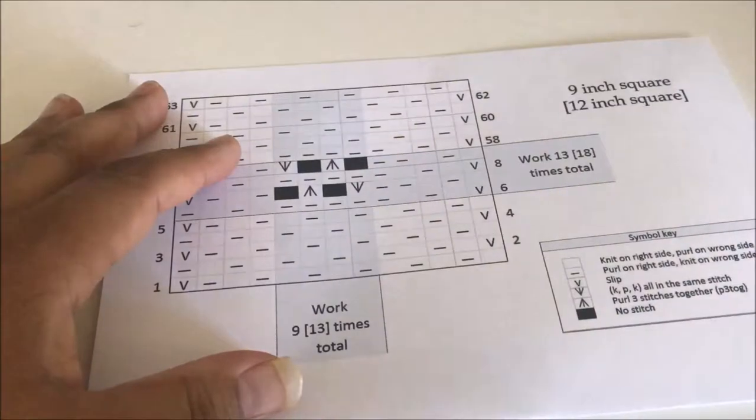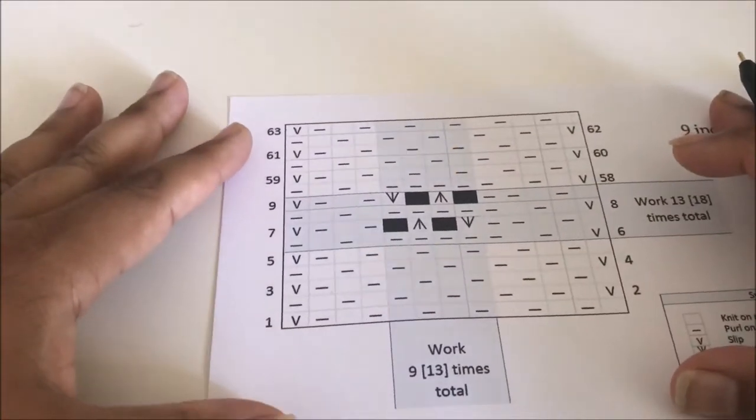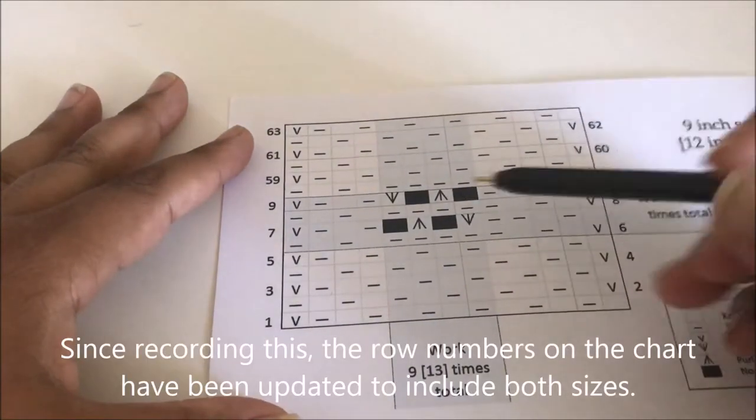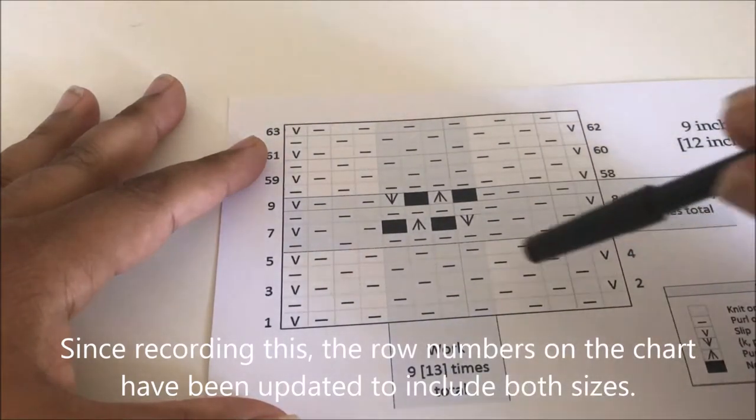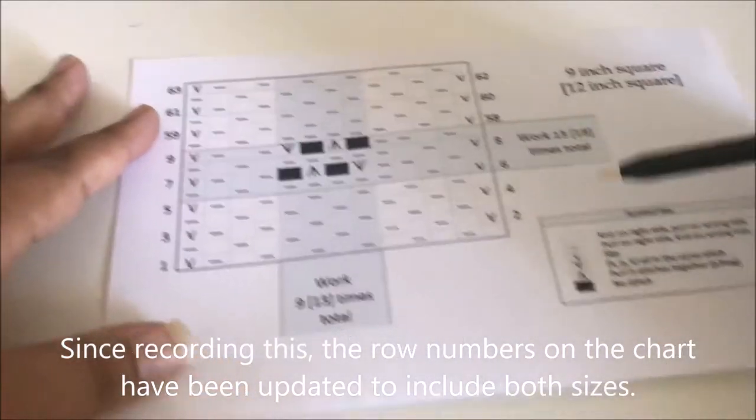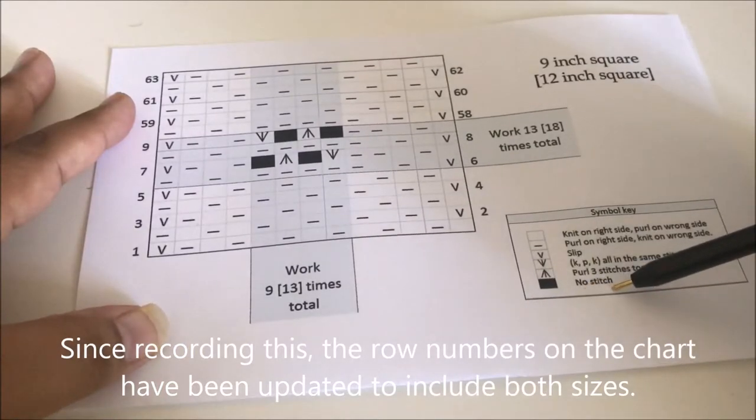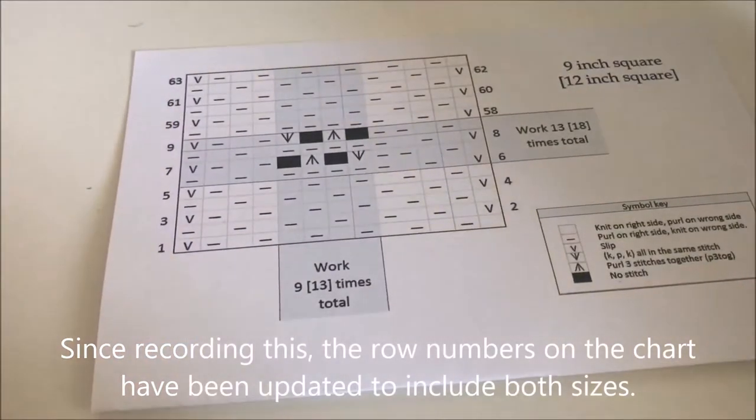So before we get into the actual knitting, I wanted to look at the chart with you for a minute. You'll see some black squares on here, and this is the first time in this series that I've had these black squares. The black square means no stitch. So what exactly do I mean by that?